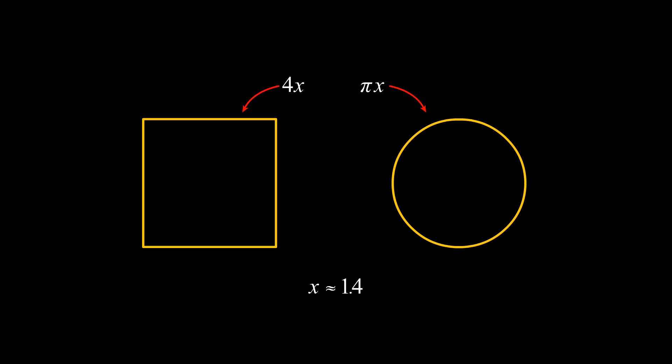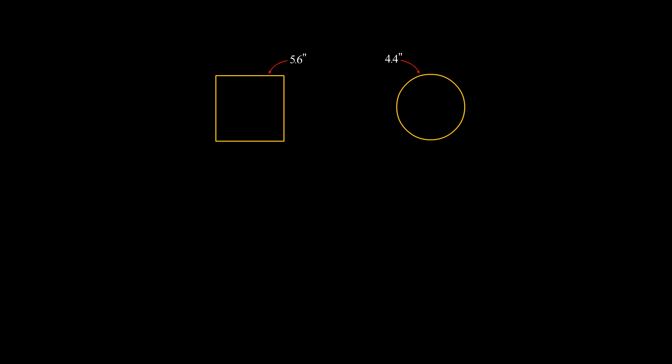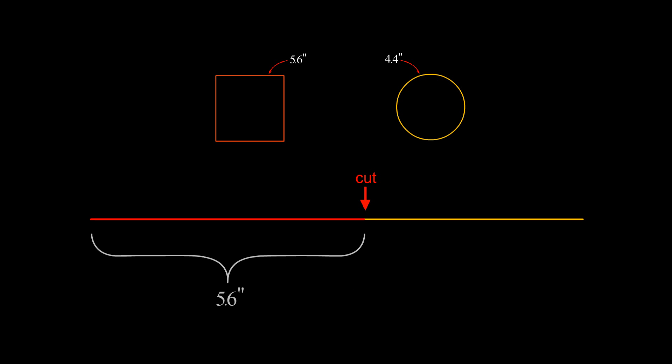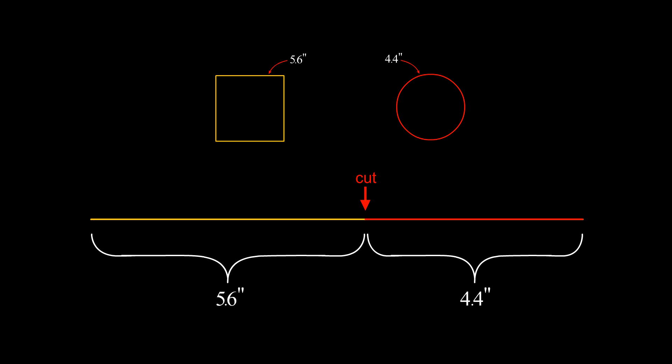So the diameter of the circle and the width of the square are both approximately 1.4 inches. The perimeter of the square will then be four times that amount, or 5.6 inches, and the circumference of the circle will be pi times that amount, or approximately 4.4 inches. Checking our answer, we see that the sum of these lengths is indeed 10 inches. Thus, to fabricate these shapes, the 10-inch length of gold wire must be cut into two segments, 5.6 and 4.4 inches long.